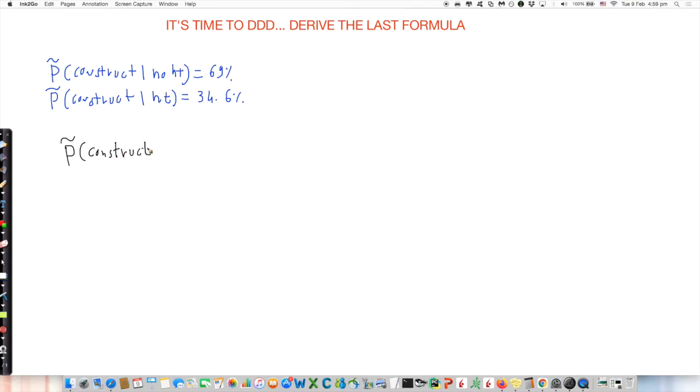Our estimation of the probability of making construct is equal to the probability of making construct if no hand trap times the probability of no hand trap plus the probability of construct with hand trap times the probability of hand trap.